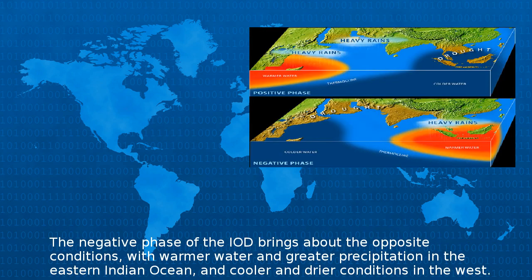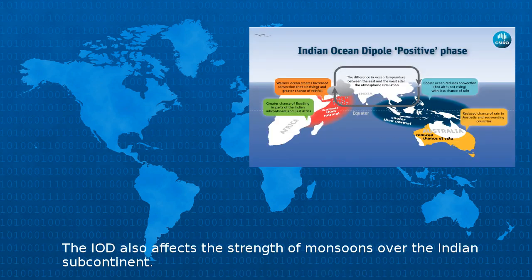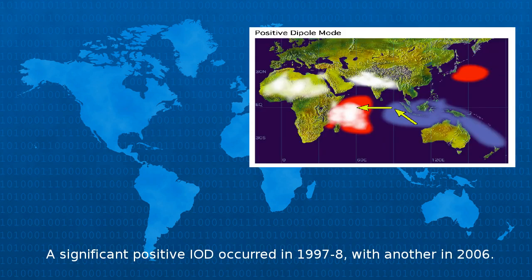The positive phase tends to cause droughts in adjacent land areas of Indonesia and Australia. The negative phase of the IOD brings about the opposite conditions, with warmer water and greater precipitation in the eastern Indian Ocean, and cooler and drier conditions in the west. The IOD also affects the strength of monsoons over the Indian subcontinent. A significant positive IOD occurred in 1997–98, with another in 2006.